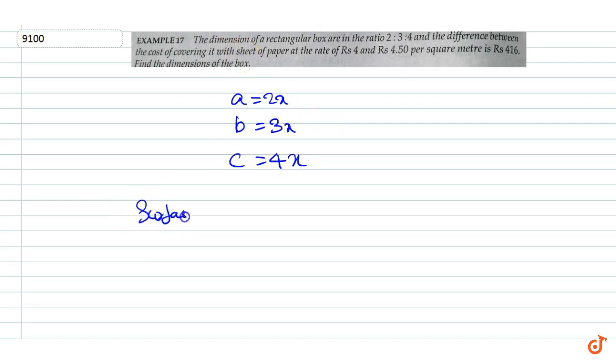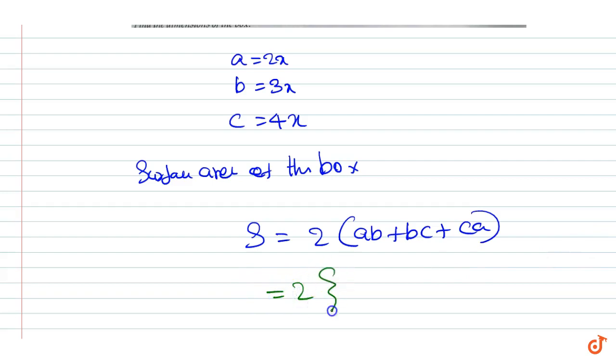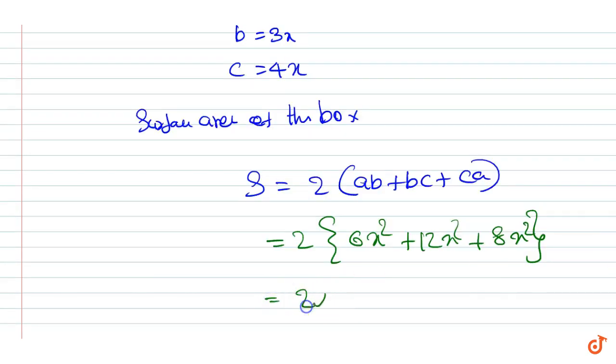Then the surface area of the box S equals 2 times (ab plus bc plus ca). This is equal to 2 times (6x² plus 12x² plus 8x²), equal to 2 times 26x², is equal to 52x².